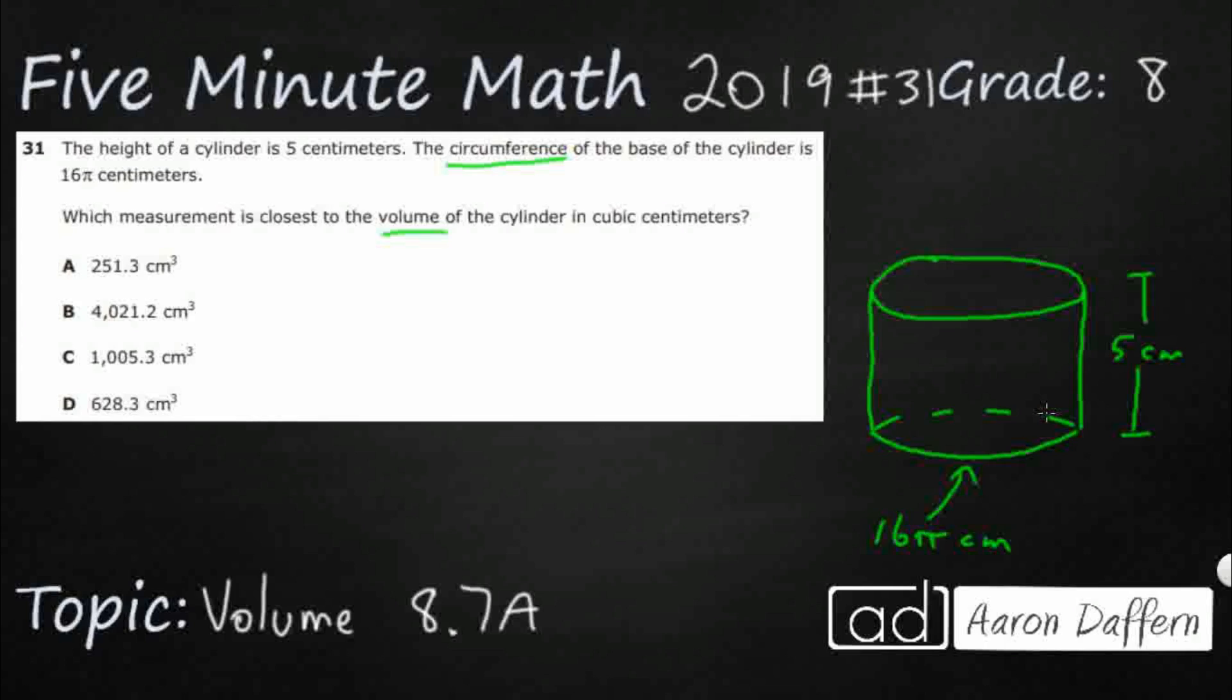All right, so I need to find the volume. So if I go to my mathematics chart, I'm going to find this. Volume equals base times height. And that works for either a cylinder or a prism. In this case, we're looking at a cylinder. All right, so my height is 5. That's easy. So volume equals base times 5. The biggest problem is, what is this base?